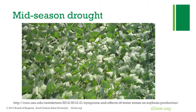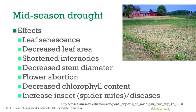Here you can see mid-season drought: plants are rolling their leaves to expose the undersides to conserve moisture. This severe case from Michigan shows drier areas on the upper slope with leaf senescence, decreased leaf area, shortened internodes — the plant comes back shorter after the stress — decreased stem diameter, flower initials already aborting, and decreased chlorophyll content.